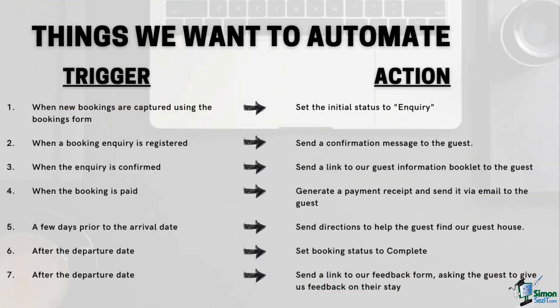You can add automations to any board in Monday.com, and boards can have as many automations as you need. Each automation consists of two parts: a trigger and an action. The trigger specifies what event should happen for the automation to kick off, and the action specifies what we should do about it.